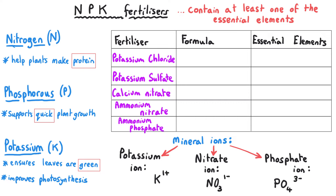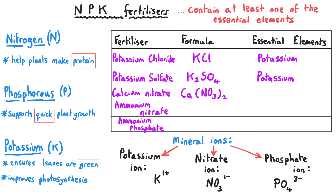For example, we've got potassium chloride with the formula KCl, which has got the essential element potassium. Potassium sulfate with the formula K2SO4 also contains potassium. Calcium nitrate with the formula Ca(NO3)2 — that means there are two nitrate ions for each calcium ion. And ammonium nitrate has got the essential element nitrogen in two different places: in the ammonium ion NH4 1+ and in the nitrate ion NO3 1-.